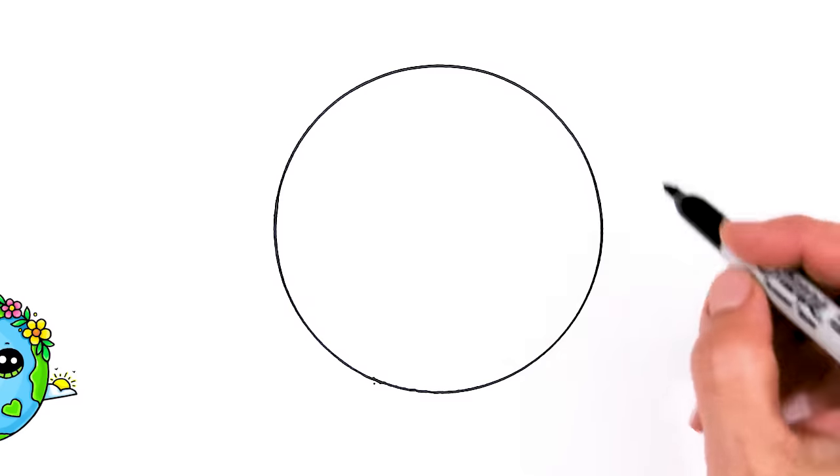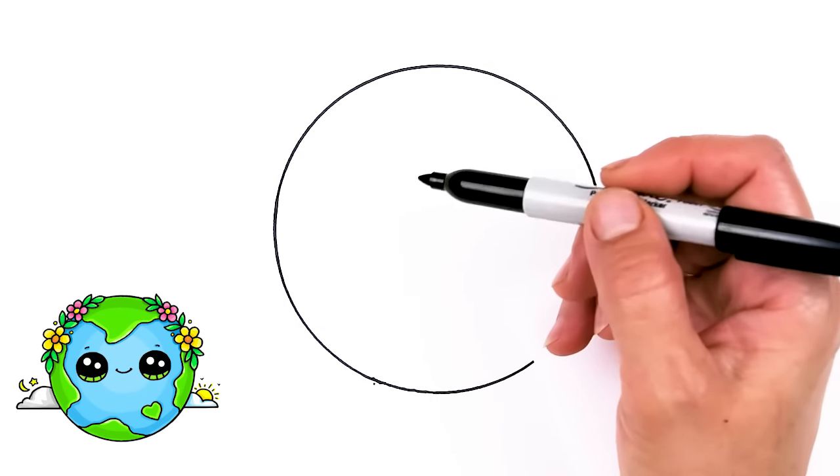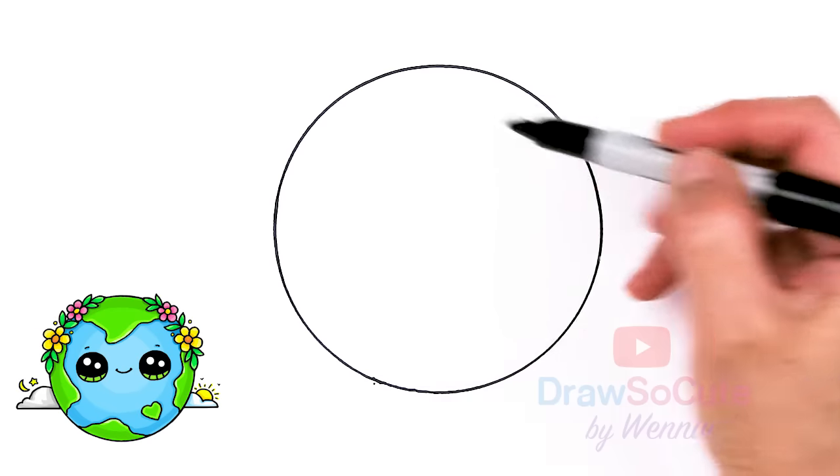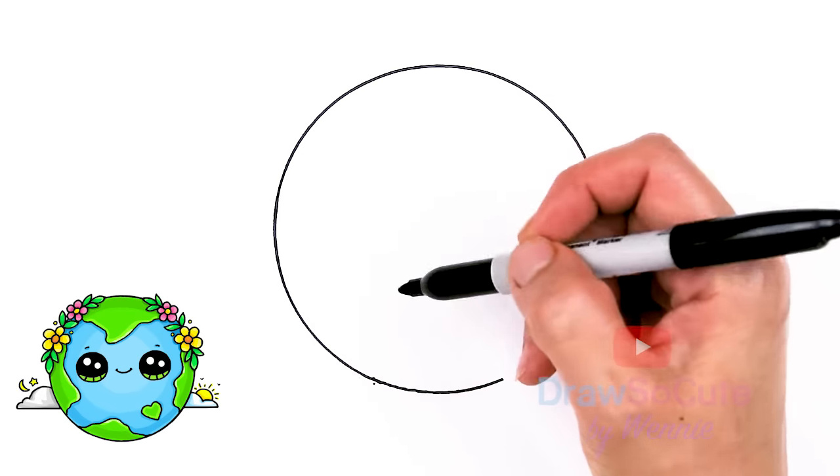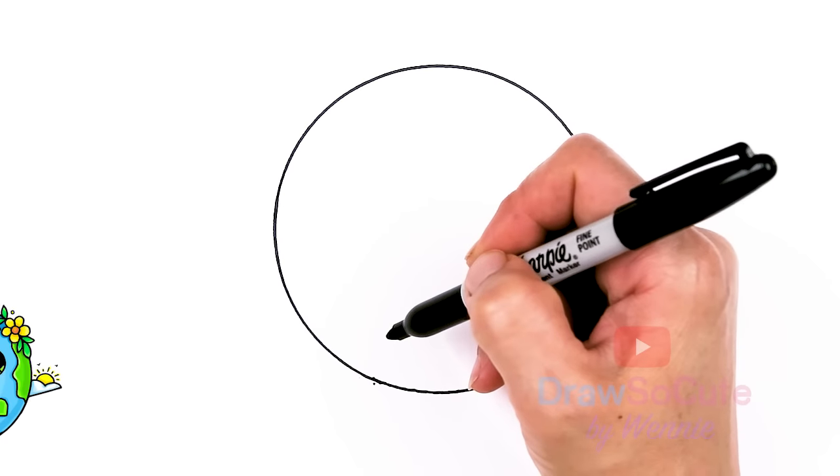Okay so now that we have our circle, let's go ahead and bring it to life. If you're using a pencil that would be great, because we're gonna be drawing some flowers on the sides and I'm going to have to erase these lines. But I'm using a Sharpie because I want you to be able to see what I'm doing a lot better.